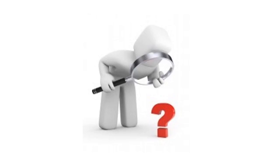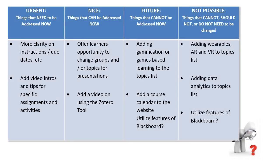Now that I've received some anonymous feedback from my students, I need to decide what to do with that information. One of the best ways to deal with the feedback is to prioritize based on categories: urgent things that need to be done right now, things that would be nice to do now, things that cannot be addressed now but would be good to address for future offerings of the course, and things that are not possible to address. You can see from this table that I added more clarity on instructions and due dates and adding a video intro to course topics to the urgent category, and allowing students to change their groups and adding a video about how to use Zotero to the nice to do now category. Some things, like adding topics to the official course curriculum, were not possible to do.